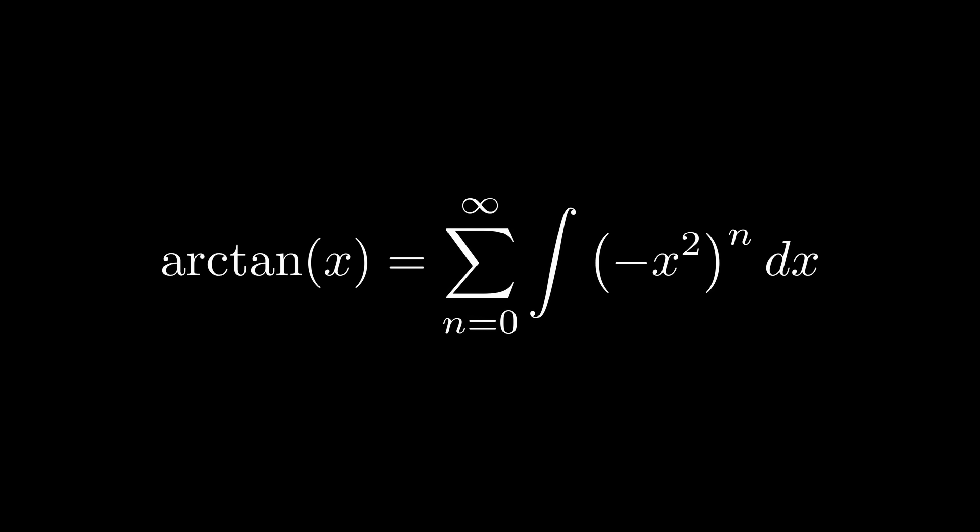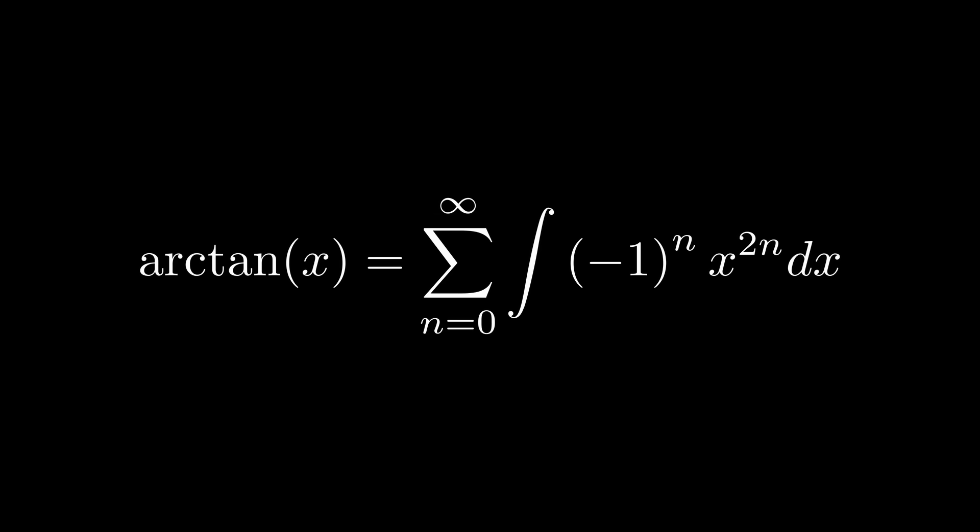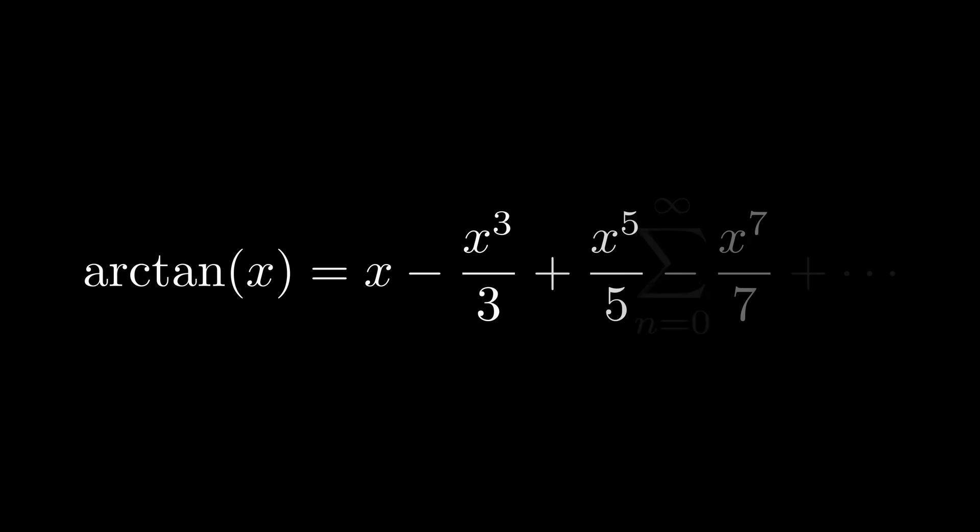Now we're going to rewrite this integral, and we can switch the integral and summation signs, bring that negative one to the n out, because that's just a constant. And then we can use the reverse power rule to solve that. And now we have this new summation approximation for arc tan of X, and it's actually a Taylor polynomial. So there you have the first four terms.